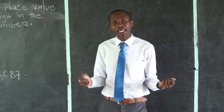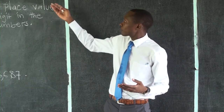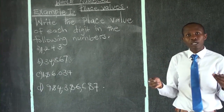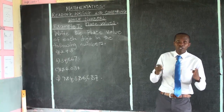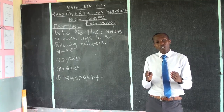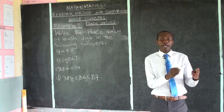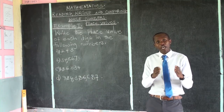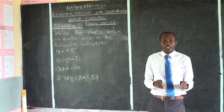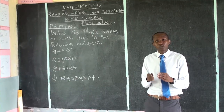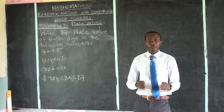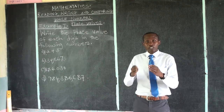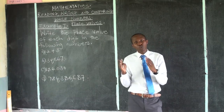The word 'place value' actually has two words: 'place' and 'value.' When you bring them together, you get place value. Simply, a place value is a position of a digit in a given number. There is no position that holds more than one digit in a number — every position has its own digit. So the position that a digit has taken in a certain number is what we call its place value.